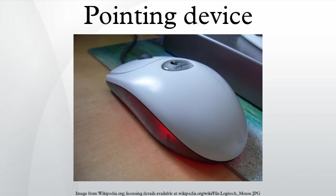Mouse: A mouse is a small handheld device pushed over a horizontal surface. A mouse moves the graphical pointer by being slid across a smooth surface. The conventional roller ball mouse uses a ball to create this action. The ball is in contact with two small shafts that are set at right angles to each other. As the ball moves, these shafts rotate, and the rotation is measured by sensors within the mouse. The distance and direction information from the sensors is then transmitted to the computer, and the computer moves the graphical pointer on the screen by following the movements of the mouse.